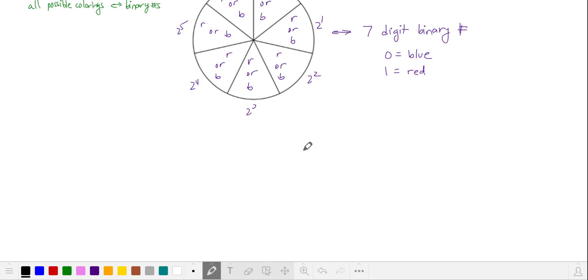We can arbitrarily say that zero corresponds to a blue section and a one-digit corresponds to a red section. So let's take a look at the simplest example. Maybe all the sections are blue. That corresponds to a binary number of zero in base two and this corresponds to all blue. So that's one coloring.